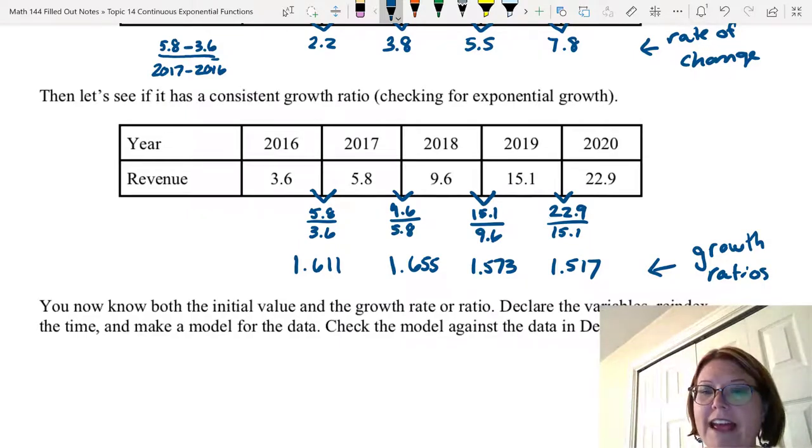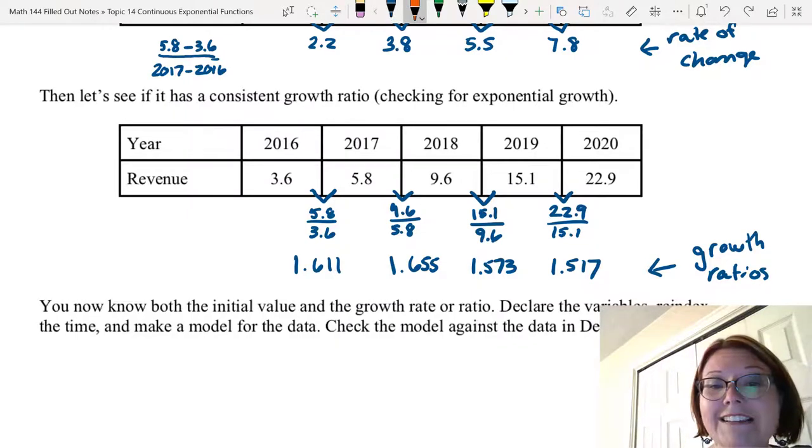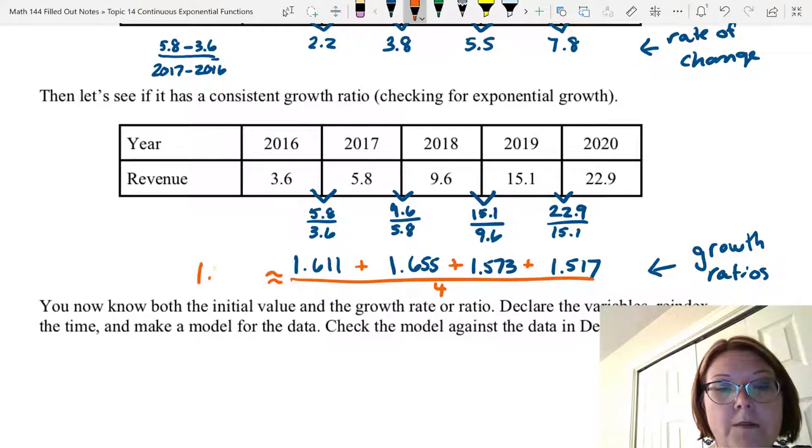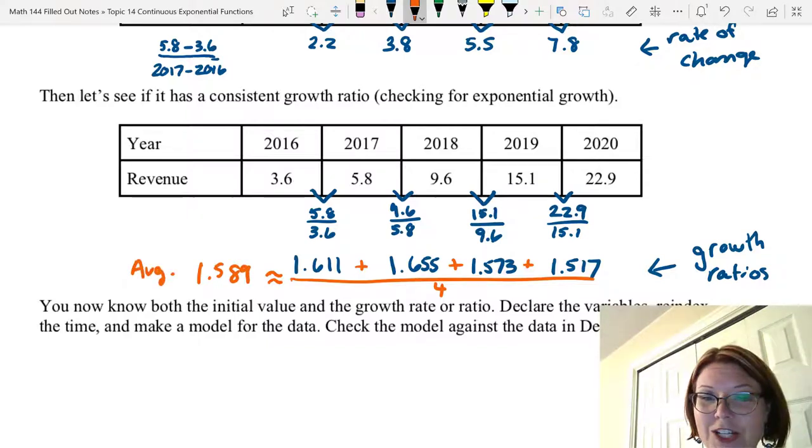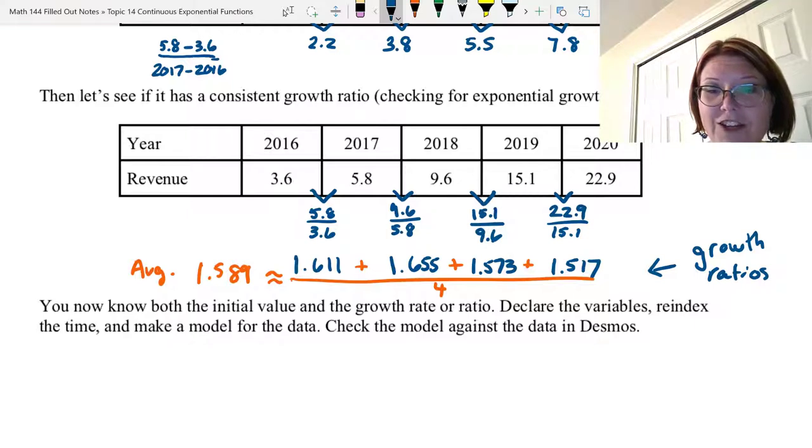Let's go ahead and calculate an average for these growth ratios so that we can use that in the model we're going to develop. Let me add up the 4 ratios and divide that by 4 to get an average of 1.589. So there's my average growth ratio. Because we know a lot about this scenario, we actually do know the initial value and we have a growth rate we've estimated for the data. Let's go ahead and declare the variables, re-index the time, and make a model for this data, assuming that it must be exponential based on our relatively consistent growth ratios.